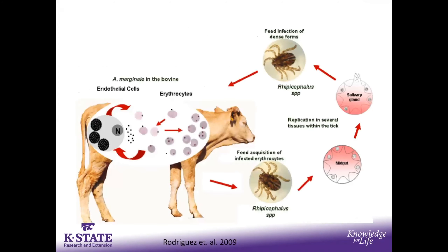As for the life cycle: a tick may be the vector and transmitter of this disease, harboring the organism. They feed on an animal, infecting its red blood cells — its erythrocytes. The body starts to pull those infected red blood cells out of the system, the animal gets anemia, and then we see clinical signs. That's what happens internally.